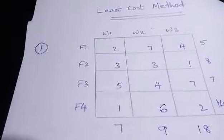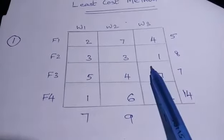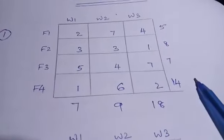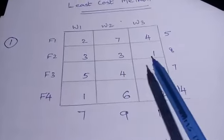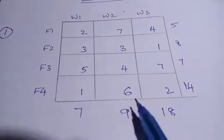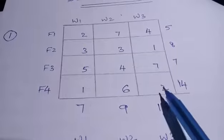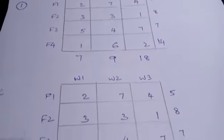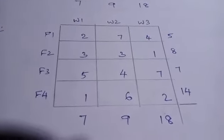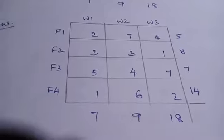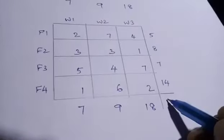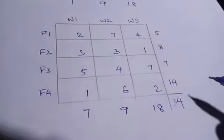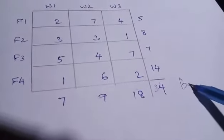So this is the question given. The sources are F1, F2, F3, F4 and the destinations are W1, W2, W3. Supply values are 5, 8, 7, 14 and demand is 7, 9, 18. The cost values are 2, 7, 4, 3, 3, 1, 5, 4, 7, 1, 6, and 2. Before applying the method, we have to check whether this is balanced or not. The sum of demand is 34 and the sum of supply is also 34, hence it is balanced.